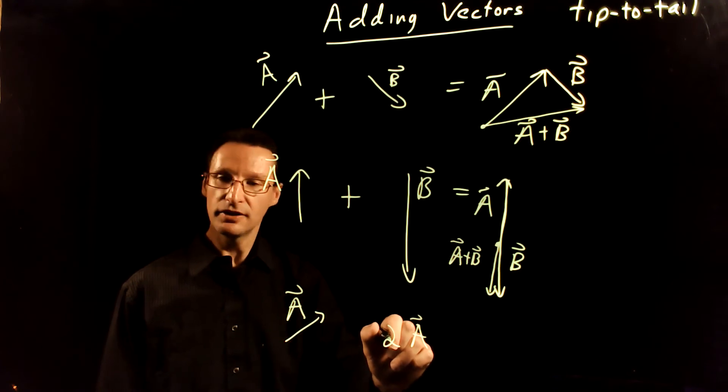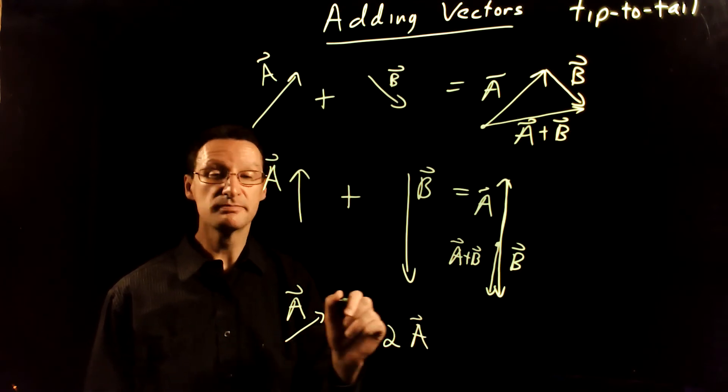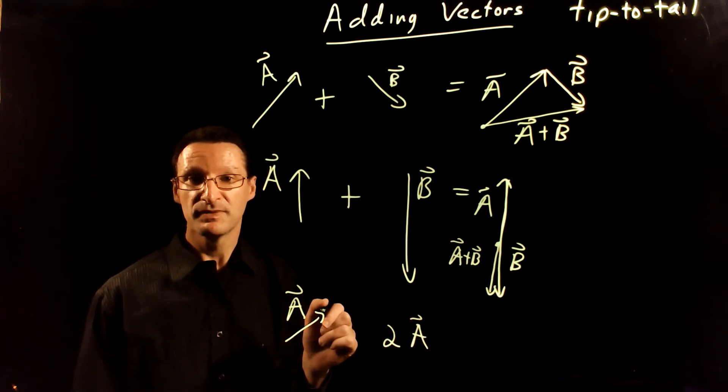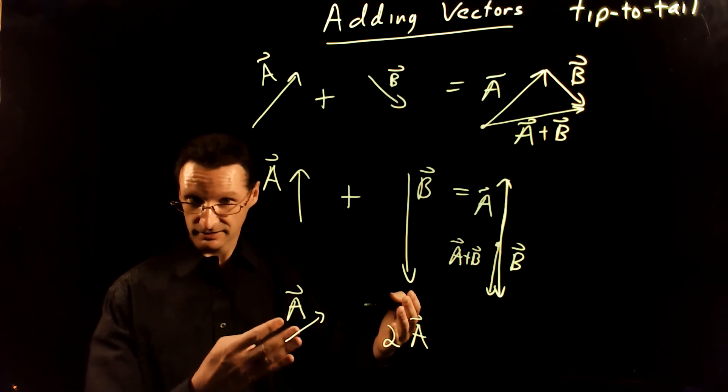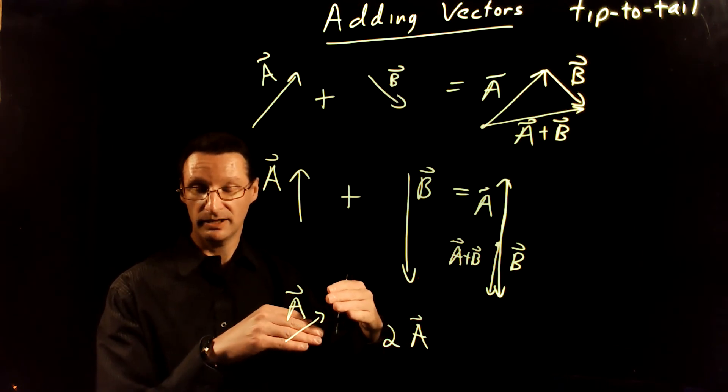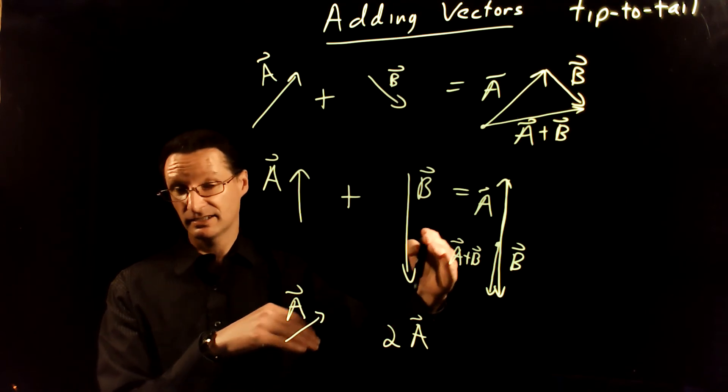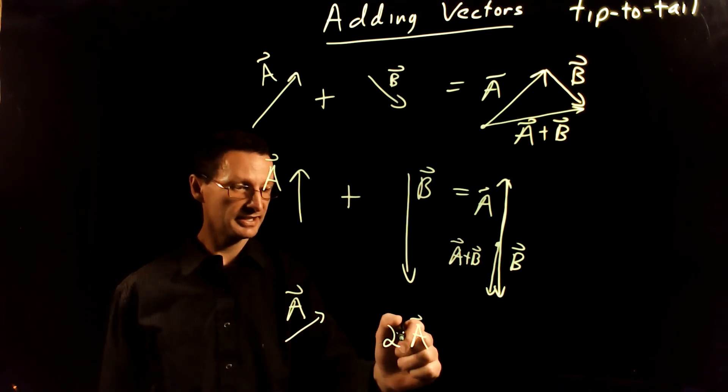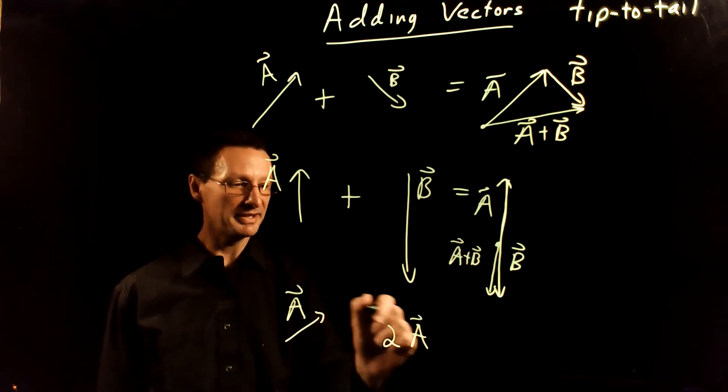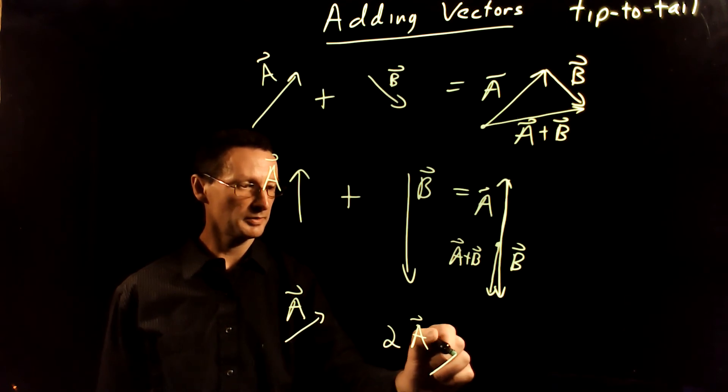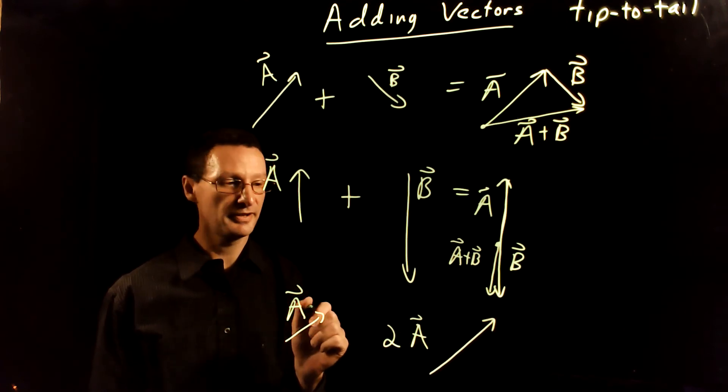Well, 2, this is a scalar. I'm just multiplying that by the vector. That's just going to, as the word scalar implies, scale it, lengthen it, or shorten it. In this case, I'm making it twice as long, but that doesn't change the direction. So I need to make that twice as long as the original vector.